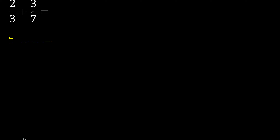First multiply like this: 7 multiplied by 2 is 14, 3 multiplied by 3 is 9, 3 multiplied by 7 is 21.